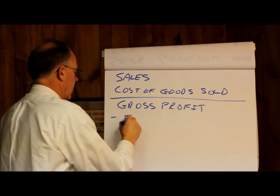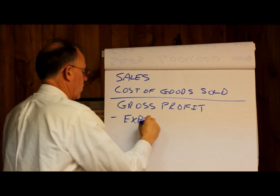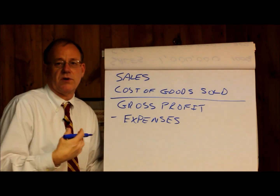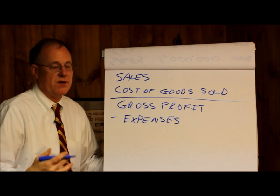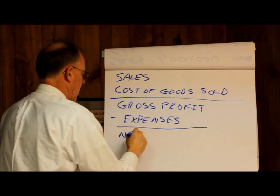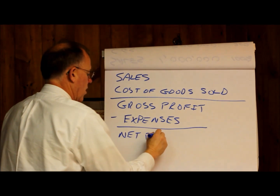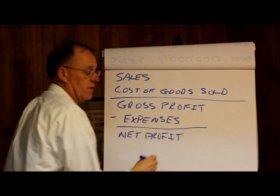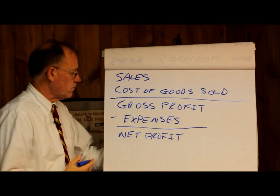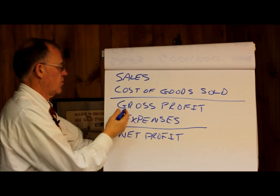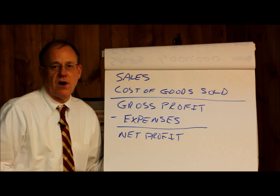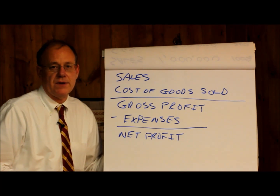Then you would have all the expenses that go into running a business — your wages, utilities, phone bills, computers, travel, all the stuff that goes into it. And what you have left over is going to be your net profit, or net profit before taxes, sometimes called income before taxes. So gross profit is after the direct costs, and net profit is after all the costs.